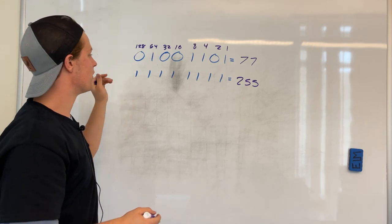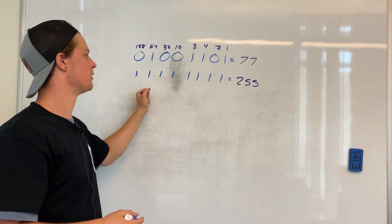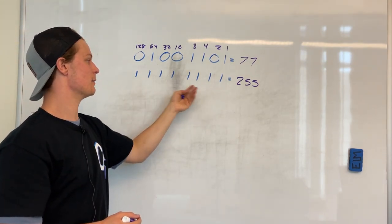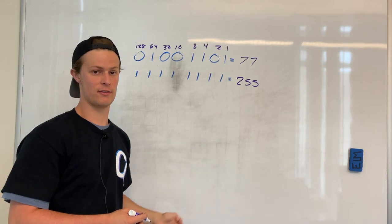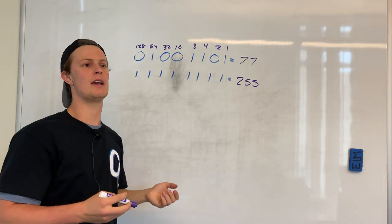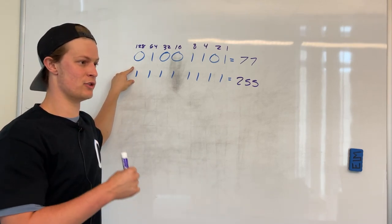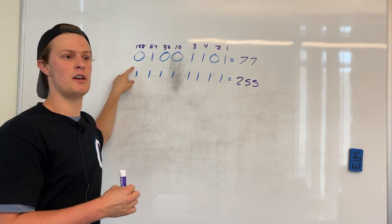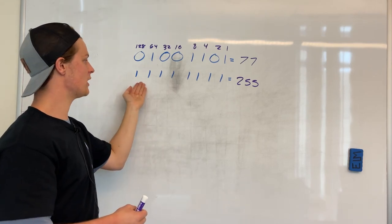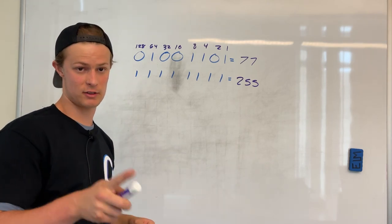Note that this max value of 255 applies to a specific type of binary number. What I mean by type is that we can treat this binary number in two different ways: as a negative number or as a positive number. We are treating it as a positive number right now, giving us a max of 255. I'll explain the signed versus unsigned distinction more in the next episode, so stay tuned for that.